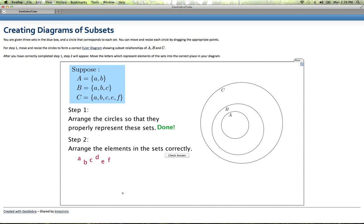Now I need to do step two and arrange the elements in these sets. So I can look and take these one at a time. A is in set A, set B, and set C. That means it needs to be in that innermost circle of set A. Likewise, b needs to be in that innermost circle.